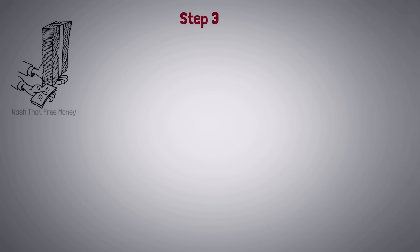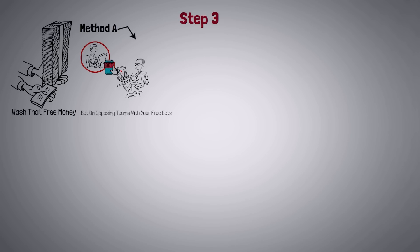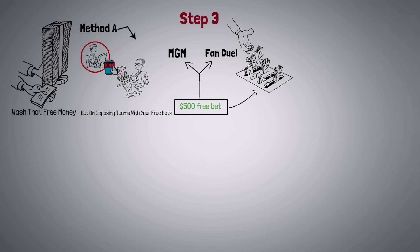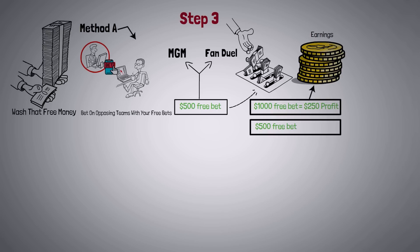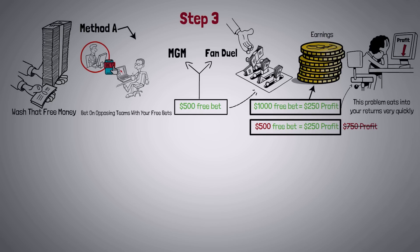Step three is to wash that free money. There are two approaches. Method A is to simply bet on opposing teams with your free bets. If MGM and FanDuel both offer you a $500 free bet, you can pit them against each other and one of those will win. You will use $1,000 of free bets and maybe make $250 of profit. This is because you do not get your stake back when you win a free bet — you only get the earnings. So if you bet $500 of free bets on a favorite to win, you might only get $250 at the end, not $750 as though you bet $500 of real money. This problem eats into your returns very quickly.